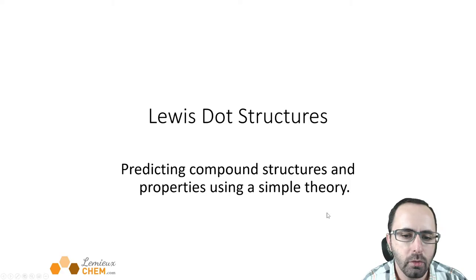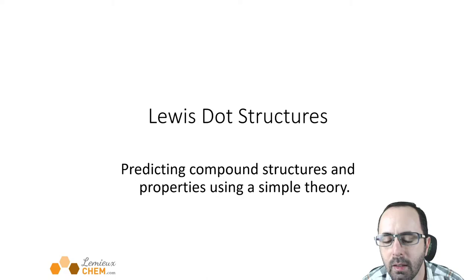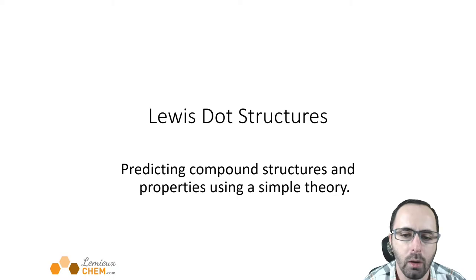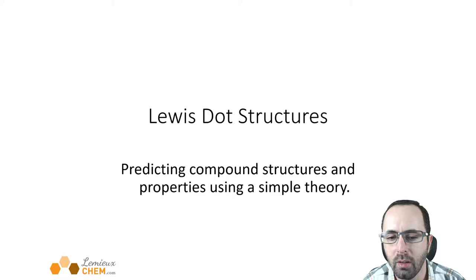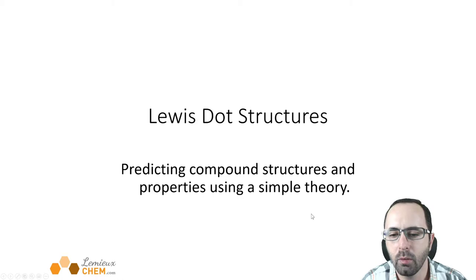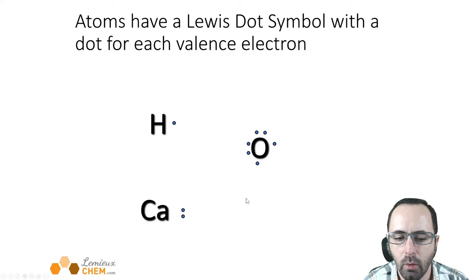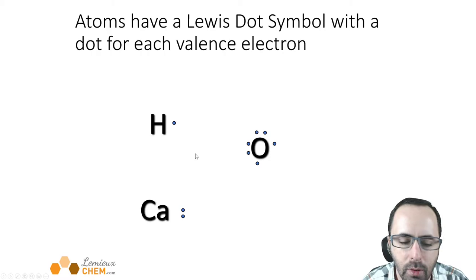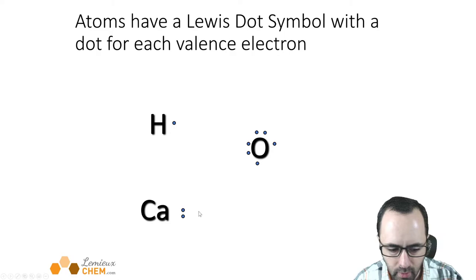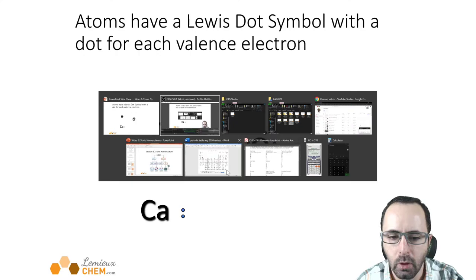First, we're going to have an introduction to Lewis dot structures. For ions, these Lewis dots are a nice way of explaining what's going on with the electrons. In the last lecture we used Bohr models to show this, but those are big and clumsy. We can use Lewis dot structures to predict structures and properties, and we'll also do Lewis dot structures later for covalent compounds in future weeks.